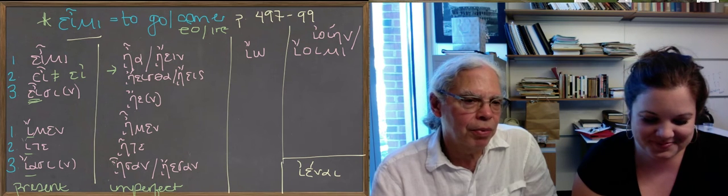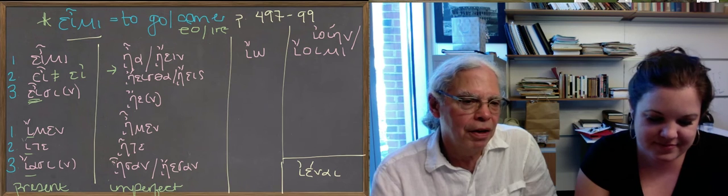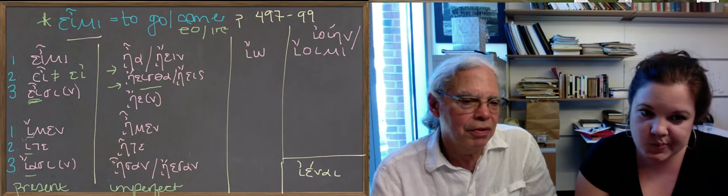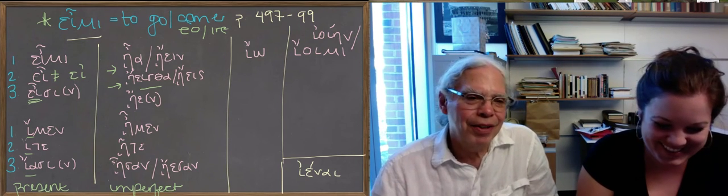Then we get the second person singular, which is ᾔει, there's an eta there. And ᾔεισθα, and that's translated ᾔεισθα, you were going.